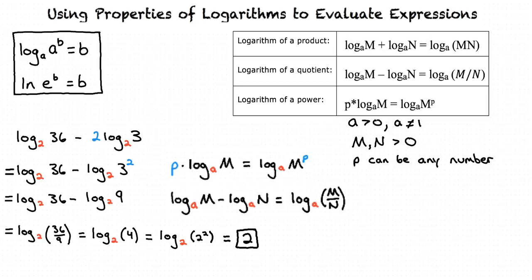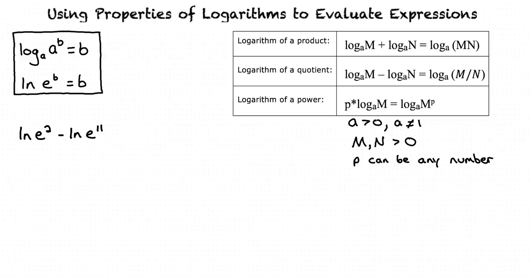Let's go over another example: Natural log of e to the power of 2 minus natural log of e to the power of 11. Looking at the definition for the natural log, we can simplify natural log of e squared to 2, and the natural log of e to the power of 11 to 11. 2 minus 11 equals negative 9.